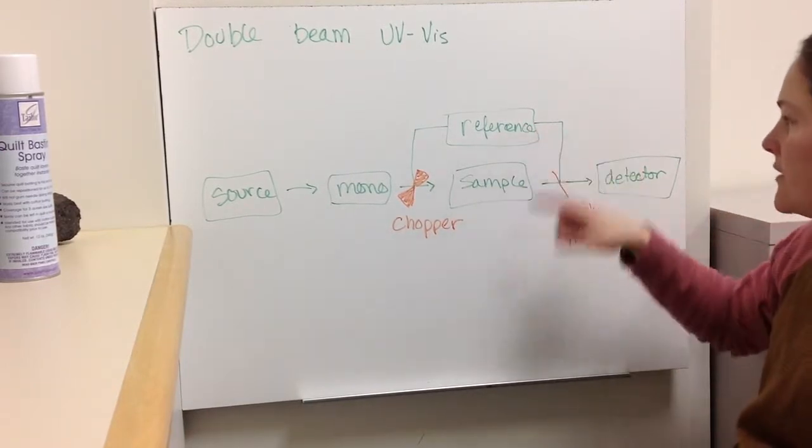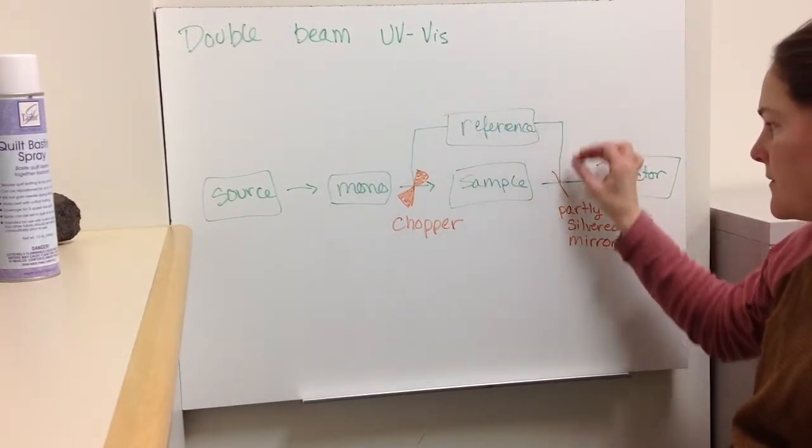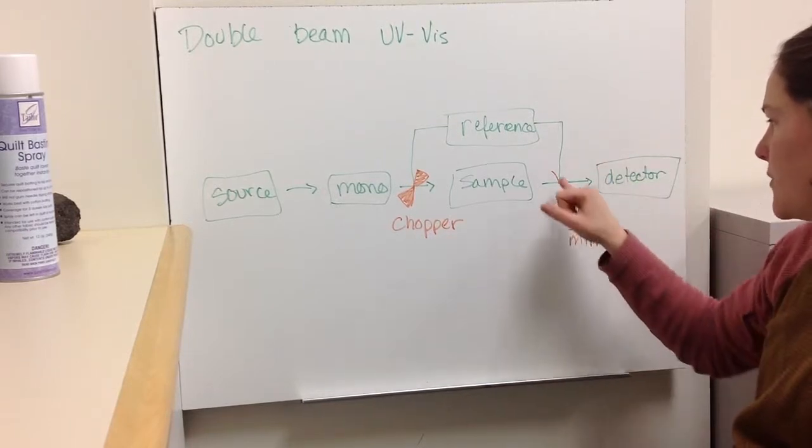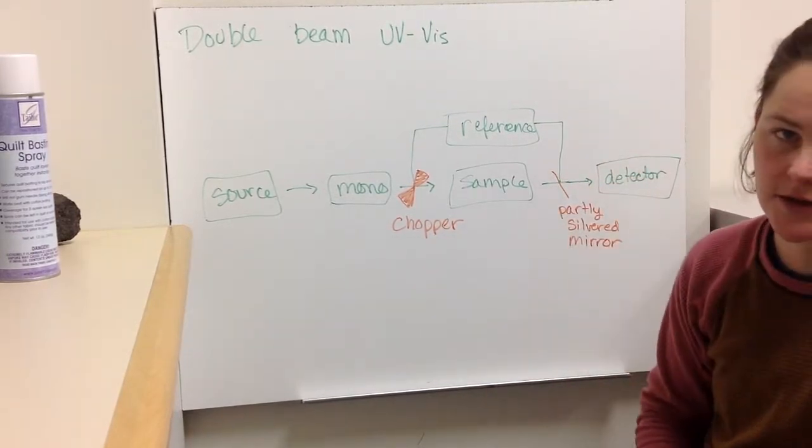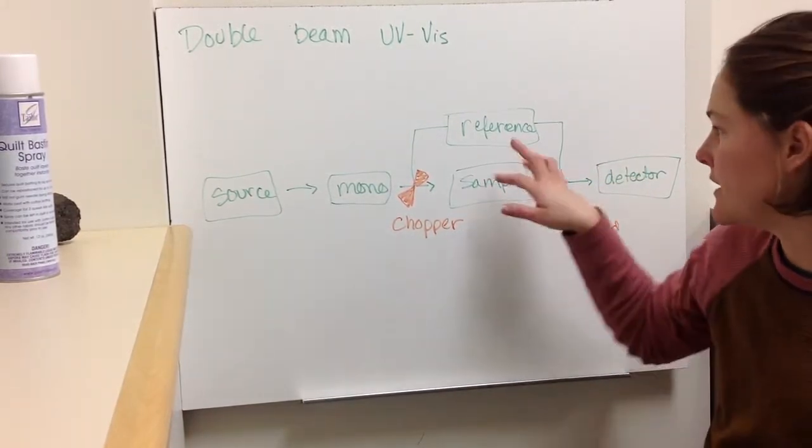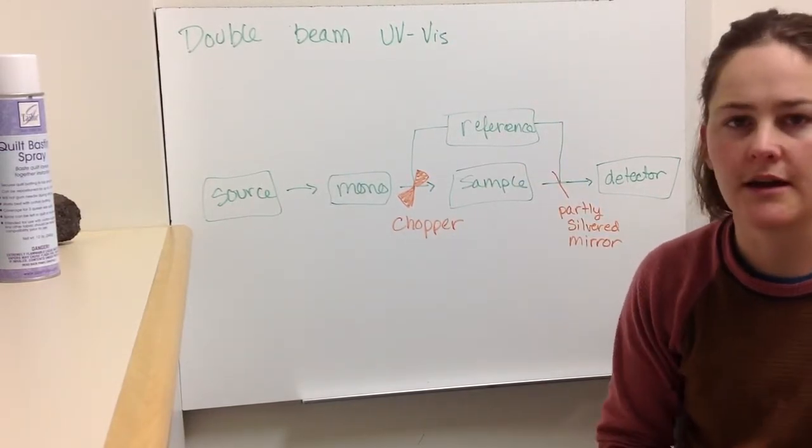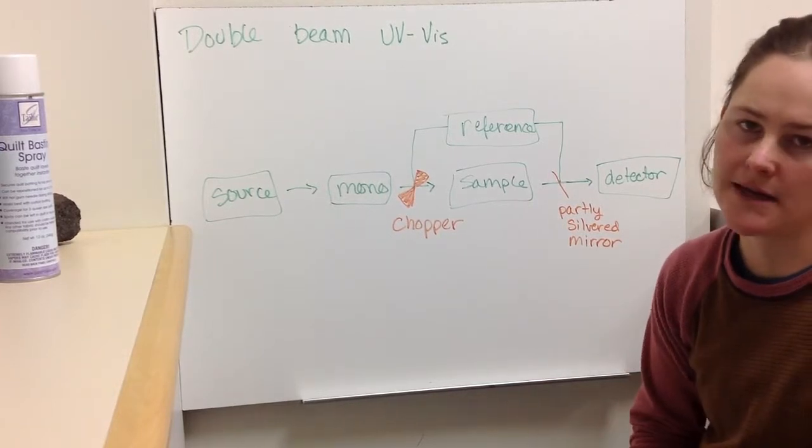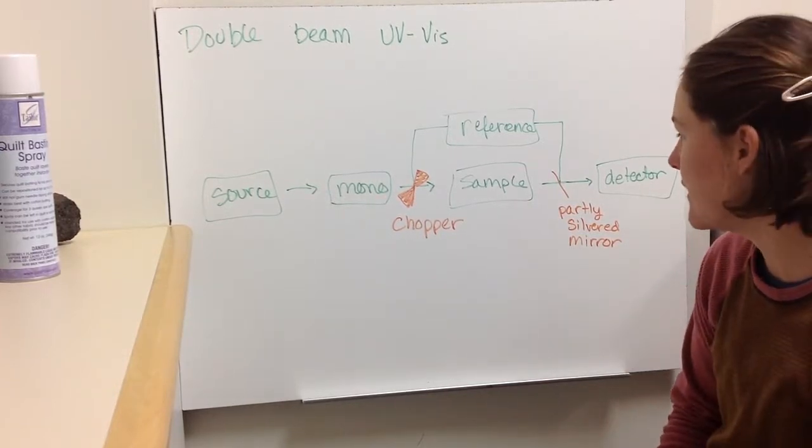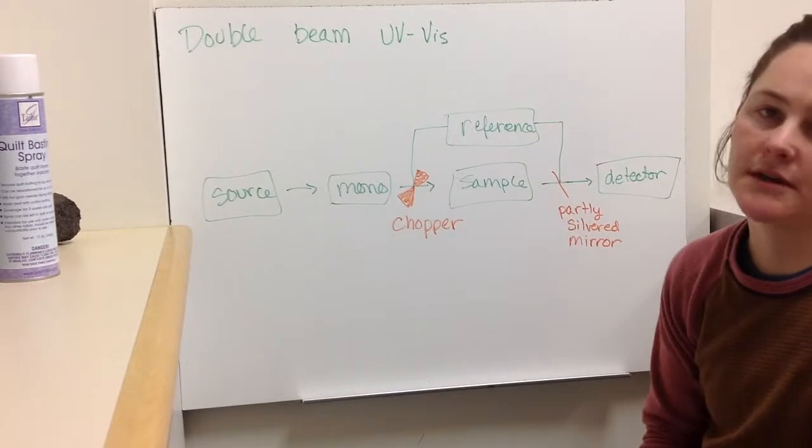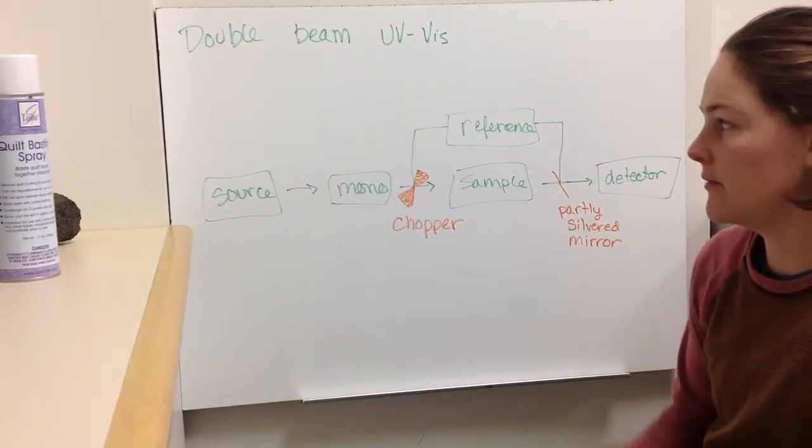So then you have light either through the reference or through the sample, then they come back together through a partially silvered mirror, and then they go to the detector. And so these cuvettes, whatever your sample's in, need to be closely matched. Same path length and everything, and then same media, dilution media. So that way, you really can isolate what signal is actually coming from the sample.